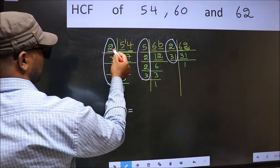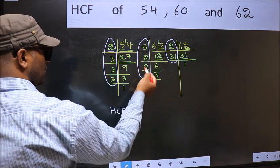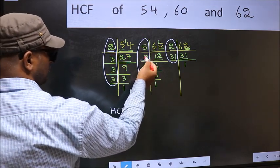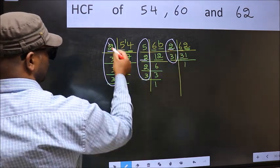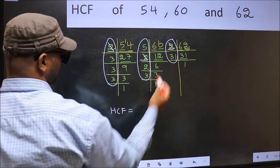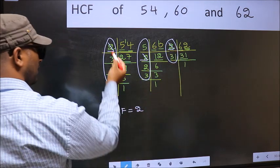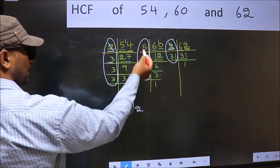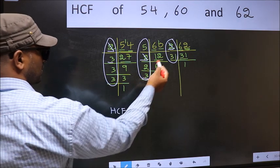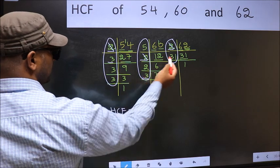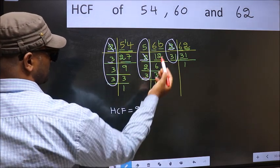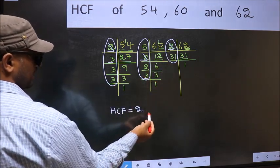Starting with the number 2. Do we have 2 here? Yes. So go to the next place. Do we have 2 here? Yes. So cut 2 right here. Next number 3. Do we have 3 here? Yes. Go to the next place. Do we have 3 here? No. 3 is not present in all the 3 places. So we cannot write here.